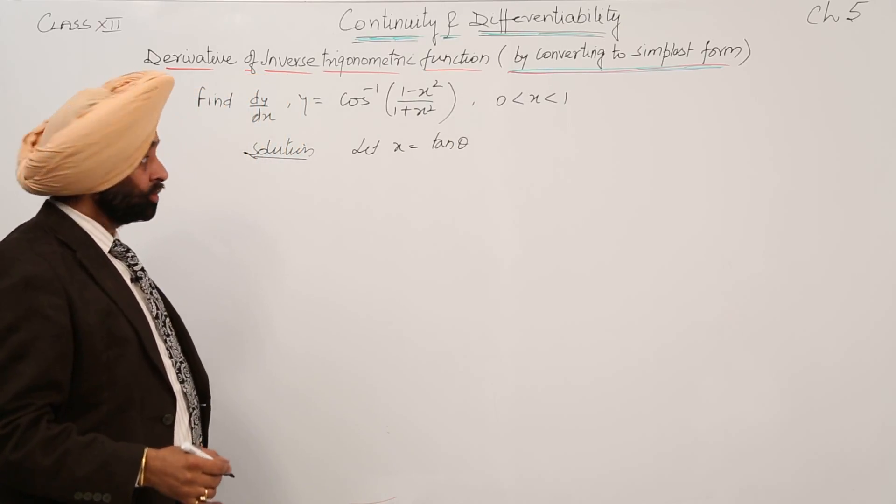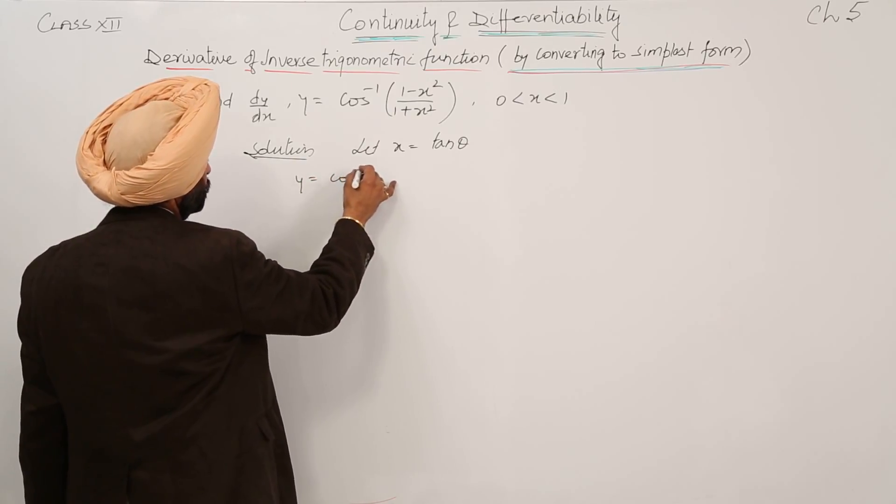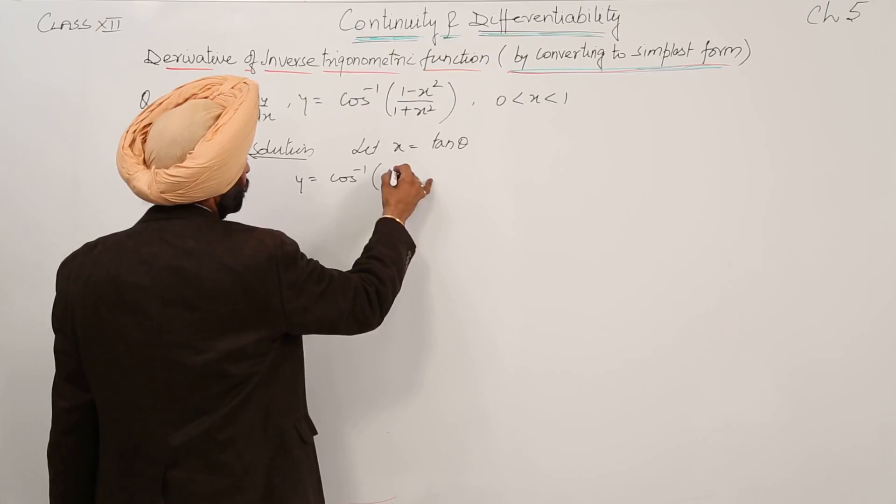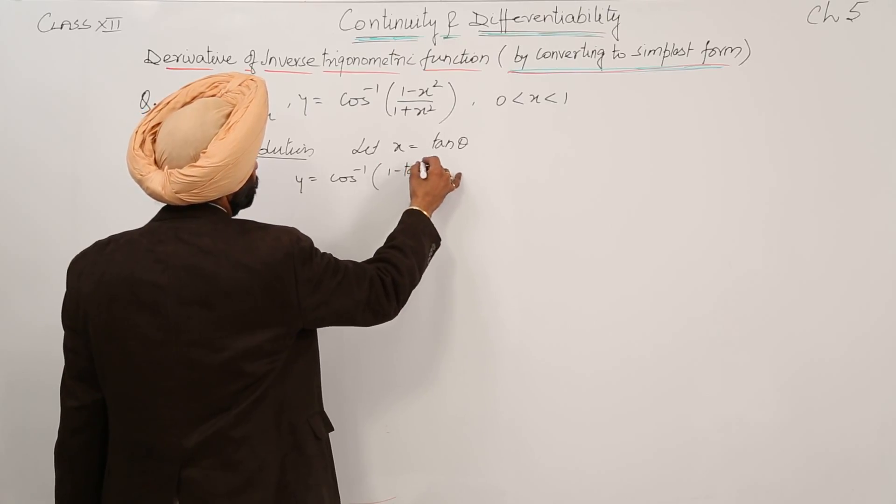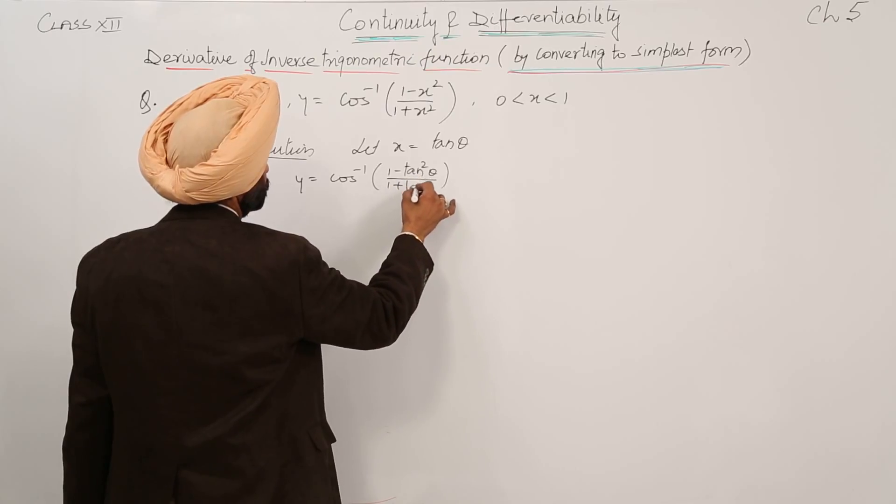So what we are getting now? y is equal to cos inverse (1 minus tan square theta) upon (1 plus tan square theta).